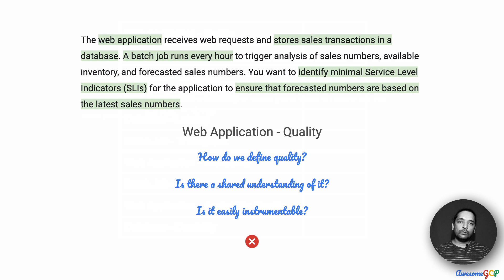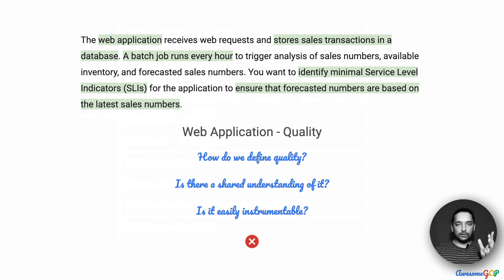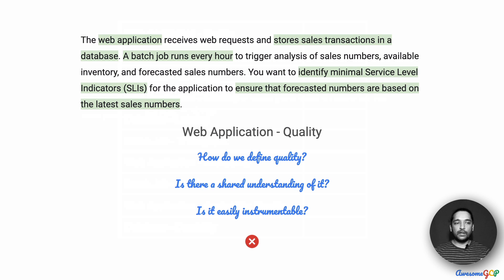The first one: web application quality. How do we define quality? What does it mean to different people? For the user, is it the speed with which data comes back? Is it what the interface looks like? Is it how quickly data is stored and retrieved? There could be multiple things that define quality, and there is no direct measure of quality itself. We could define it in different ways, and different teams might define it differently — front-end, back-end, and database teams may all have different definitions.